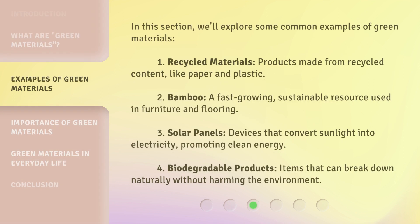In this section, we'll explore some common examples of green materials. Recycled materials: products made from recycled content, like paper and plastic. Bamboo: a fast-growing, sustainable resource used in furniture and flooring. Solar panels: devices that convert sunlight into electricity, promoting clean energy.